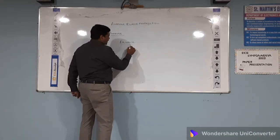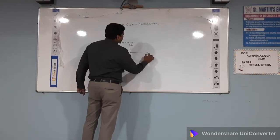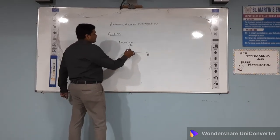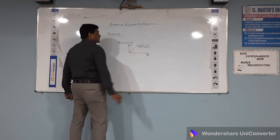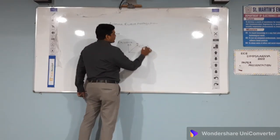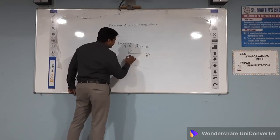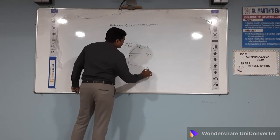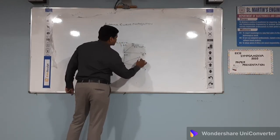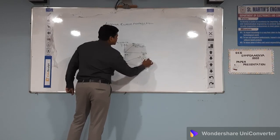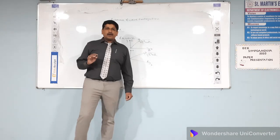In this electromagnetic wave, if you consider the electric field along the y-direction and the magnetic field along the x-direction, the resultant will be the root over of x-squared plus y-squared. This resultant will propagate along the z-direction. So always the electric field and magnetic field will be perpendicular to each other.